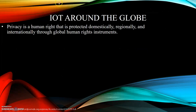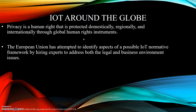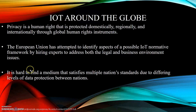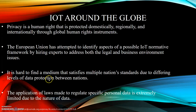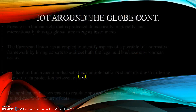IoT Around the Globe. Privacy is a human right that is protected domestically, regionally, and internationally through global human rights instruments. The European Union has attempted to identify aspects of a possible IoT normative framework by hiring experts to address both the legal and business environment issues, though this proved to be unsuccessful. It is hard to find a medium that satisfies multiple national standards due to the differing levels of data protection between nations. The application of laws made to regulate specific personal data is extremely limited due to the nature of the data.